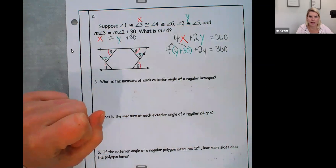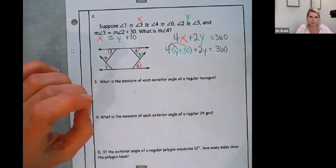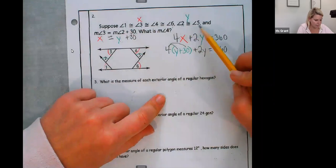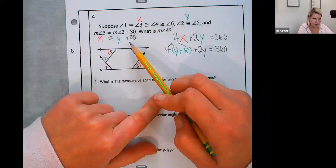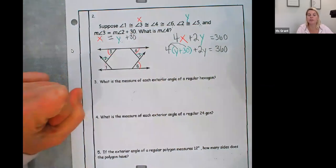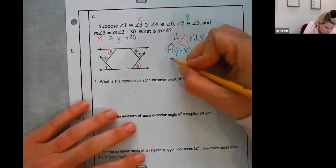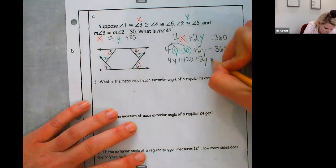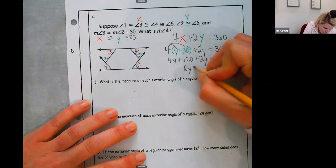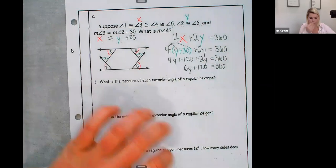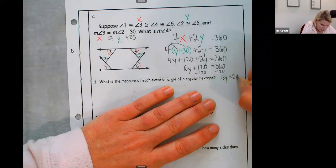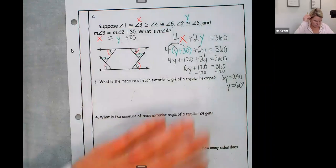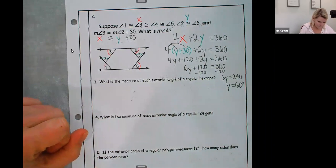I have to do substitution because I need to solve for just one variable. These are all the same X, X, X, X. These two are the same Y, Y. Then I was told that one of the X's equals Y plus 30, 30 more degrees. So now I'm just substituting and solving for one variable. 4Y plus 120 plus 2Y equals 360. 6Y plus 120 equals 360. Minus 120. 6Y equals 240. Y equals 40 degrees.